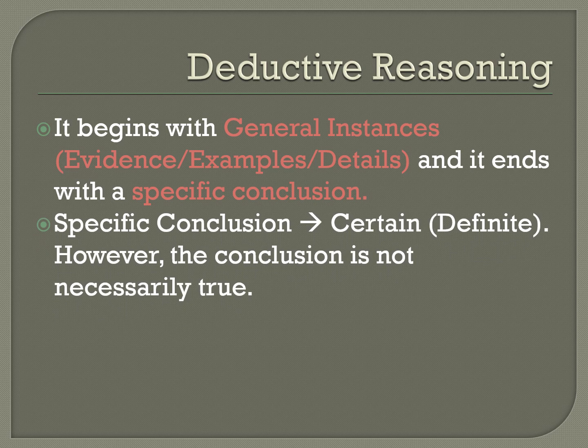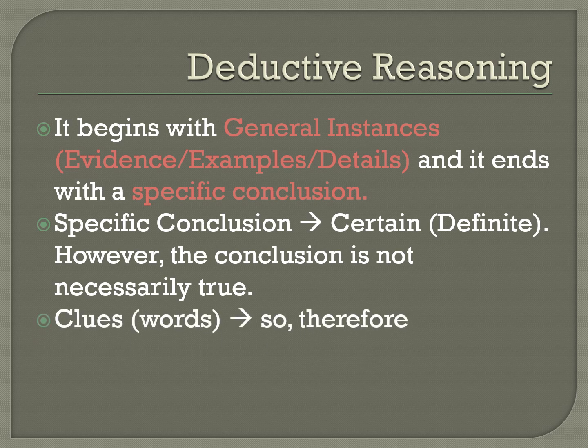Since deductive reasoning leads to a specific conclusion, the conclusion is certain or definite. To remember this: inductive reasoning leads to an indefinite conclusion — I and I. Deductive reasoning leads to a definite conclusion — D and D. Clue words for deductive reasoning are: so, therefore, thus, hence, definitely, ultimately, for sure. These are words that sound definite and certain.